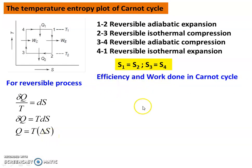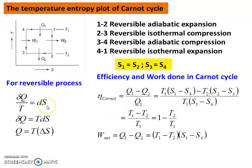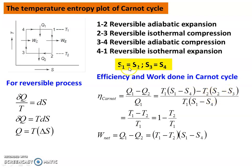For the efficiency and work done of the Carnot Cycle: efficiency equals (Q1 minus Q2) divided by Q1. Now Q1 is the heat transfer, equal to T1·(S1 minus S4), and Q2 equals T2·(S2 minus S3). Dividing by Q1 = T1·(S1 minus S4), and substituting S1=S2 and S3=S4, the S1 minus S4 terms cancel. Finally, Carnot Efficiency equals (T1 minus T2)/T1, which equals 1 minus T2/T1.